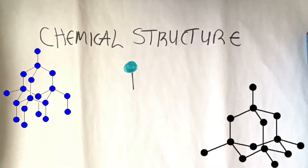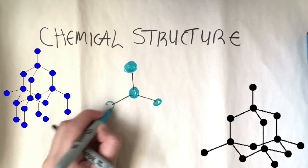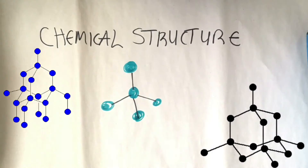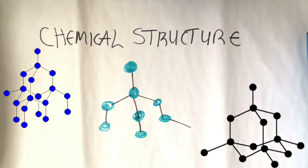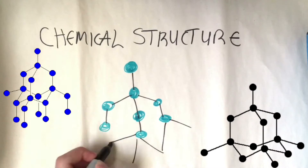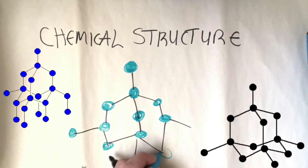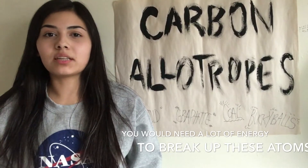Moving on to the chemical structure: diamond is made up of transparent crystals with a cubic lattice structure. Atoms are arranged in a tetrahedral shape where each carbon atom is bonded to four other carbon atoms, creating a network of strong bonds. There are no free electrons as all four valence electrons are used for bonding. These strong covalent bonds explain why diamond is so hard, has a high melting and boiling point, and does not conduct electricity.